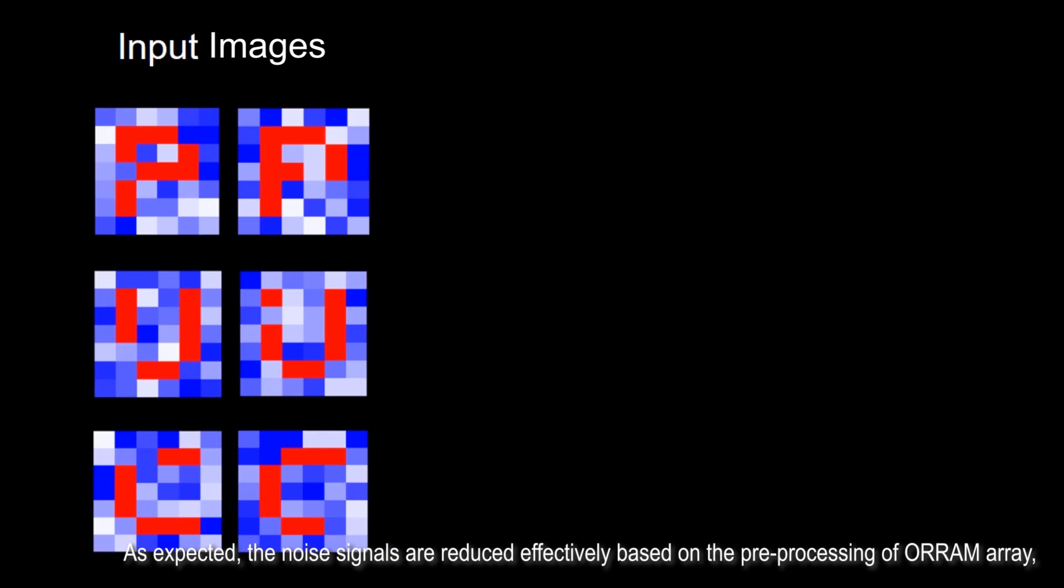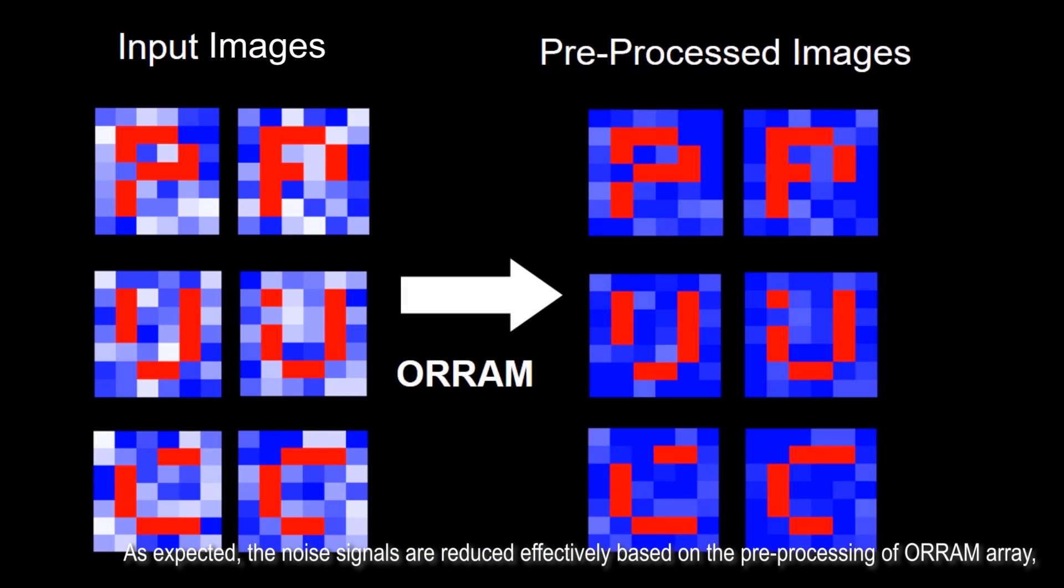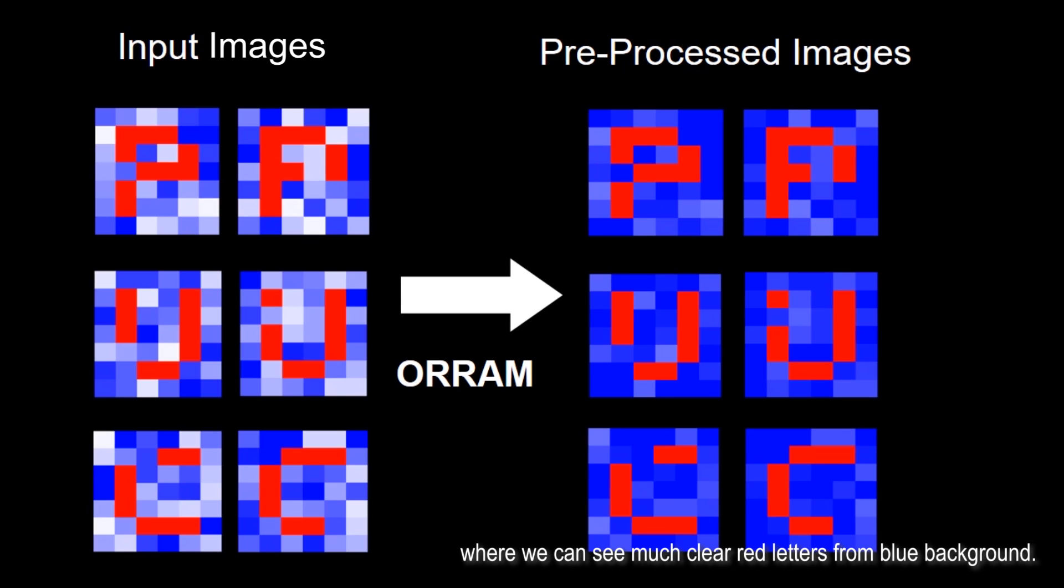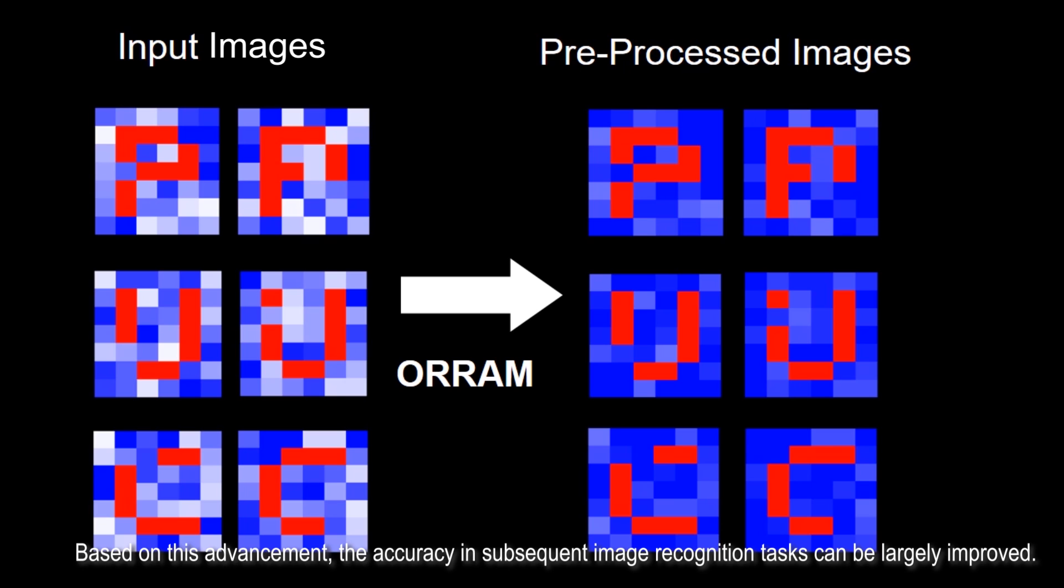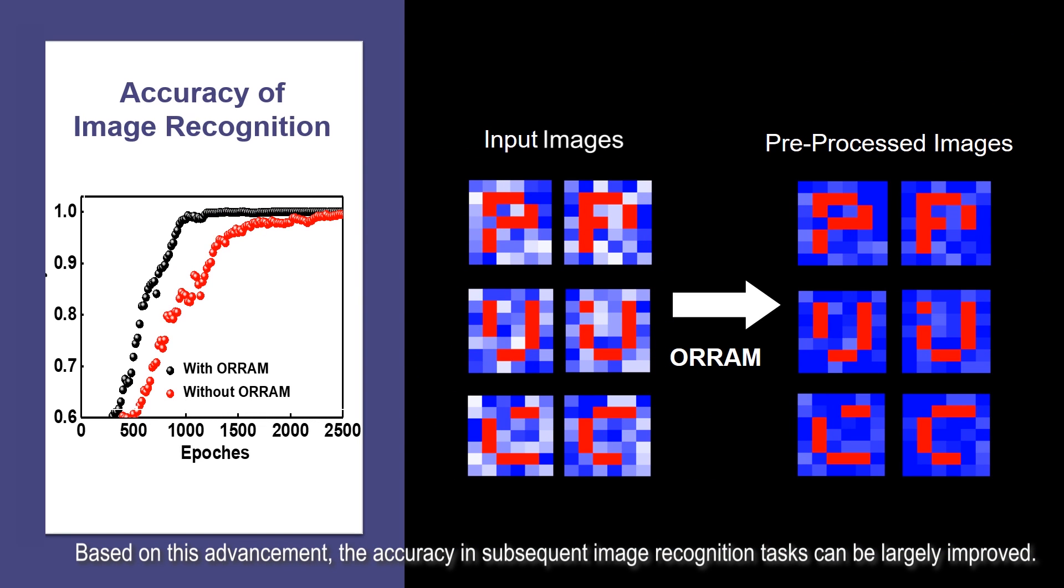As expected, the noise signals are reduced effectively based on the pre-processing of ORRAM array, where we can see much clearer letters from blue background. Based on this advancement, the accuracy in subsequent image recognition tasks can be largely improved.